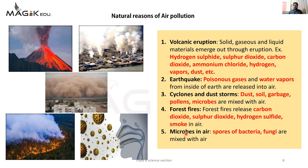Fourth reason hai - forest fire. Forest fire naturally bhi ho sakti hai - lightning ke wajah se forest fire ho sakti hai. Jab bhi lightning hoti hai to forest mein jo dry area hota hai, suki lakdiyaan hoti hain, ped, patte hote hain - to unpe lightning ke wajah se fire start hota hai aur woh fire dheere dheere pure forest mein badhne lagta hai. Aur jab yeh forest mein fire badhne lagta hai to wo smoke release karta hai - us smoke mein carbon dioxide, sulfur dioxide, hydrogen sulfide, smoke - yeh sab hote hain jo air pollution ko cause karte hain.